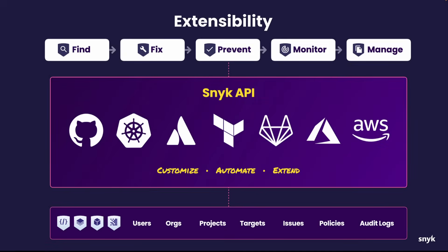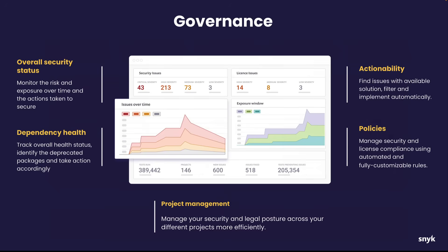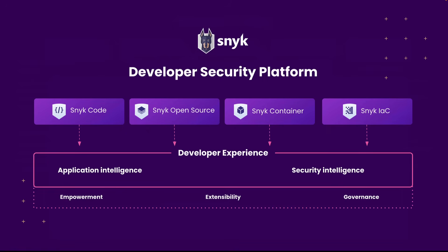This platform is extensible. As your developers are going through and finding and fixing vulnerabilities, we can integrate with their Git repos, with tools like Atlassian, your CI/CD tools, your infrastructure as code tools, and your cloud. Across all of these applications that might be tested, we provide the governance you need to show that developers are actually taking care of the vulnerabilities they're detecting, so you know with assurance that your risk is being reduced. That's our overview of the Snyk Developer Security Platform. If you want to try Snyk, you can go to Snyk.io and try it for free.